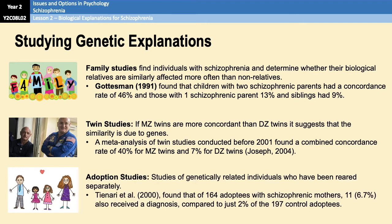Adoption studies are studies of genetically related individuals who have been reared separately. All of the research conducted here implies that schizophrenia has some genetic element to it — whether that's the 40% concordance rate for monozygotic twins, or the fact that 6.5% of adoptees with schizophrenic mothers also received a diagnosis. However, interestingly, the concordance rates don't seem to go above 50%, which is something we'll use in our evaluation points.